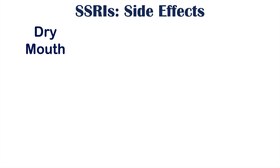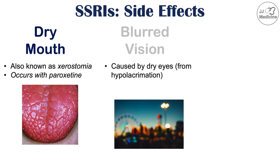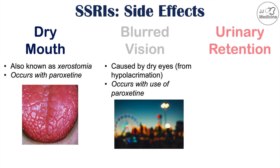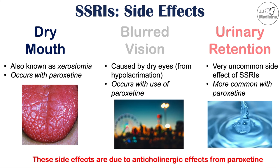There are even more side effects of SSRI use. These include dry mouth, also known as xerostomia, which occurs with paroxetine use. Blurred vision can also occur, caused by dry eyes from hypolacrimation, and this also occurs with paroxetine use. Urinary retention can also occur — this is a very uncommon side effect, also more common with paroxetine. These side effects are due to the anticholinergic effects of paroxetine, which has the most anticholinergic effects out of any of the SSRIs.